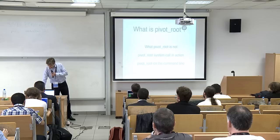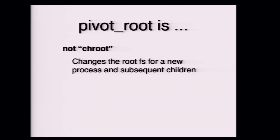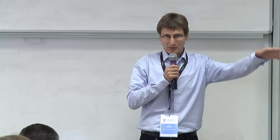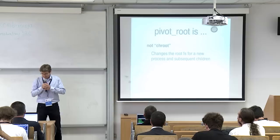Most people say, 'Oh, it's just chroot, isn't it — we already have that.' Well, it is something like chroot, but it's not just for one process — it's for the whole system. Chroot obviously puts a process into a different root, and from there on all the subprocesses are in that root. But pivot_root is not that.